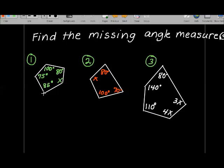The first example has 1, 2, 3, 4, 5 sides, also known as a pentagon. We have 4 of the angles. The best thing to do is add up all the angle measures: 100, 80, 75, and 85. Add 5 and 5, that's 10, add the 1, we've got 8 and 1 is 9, 9 and 7 is 16 and 8 is 24, and we get 340.